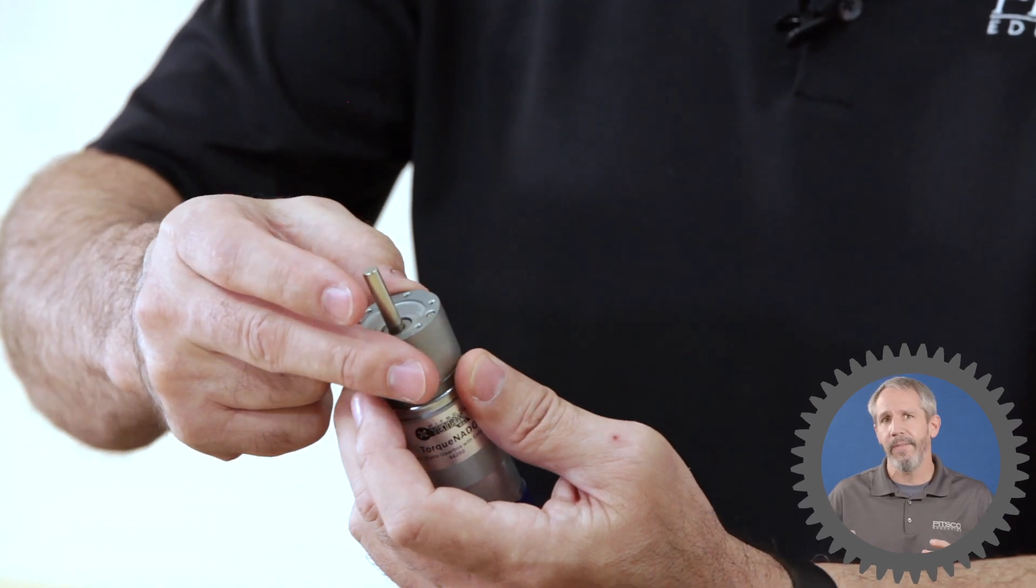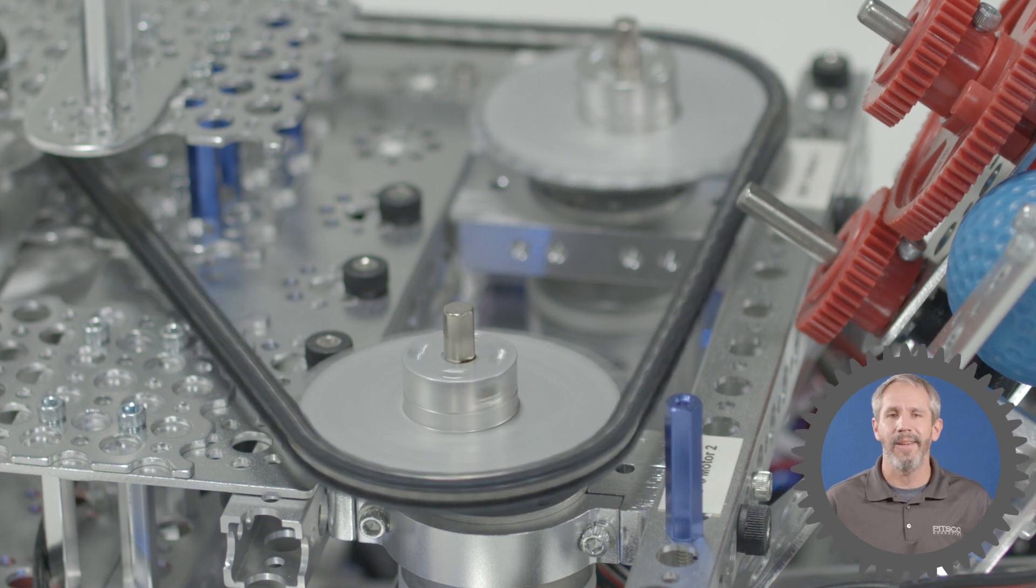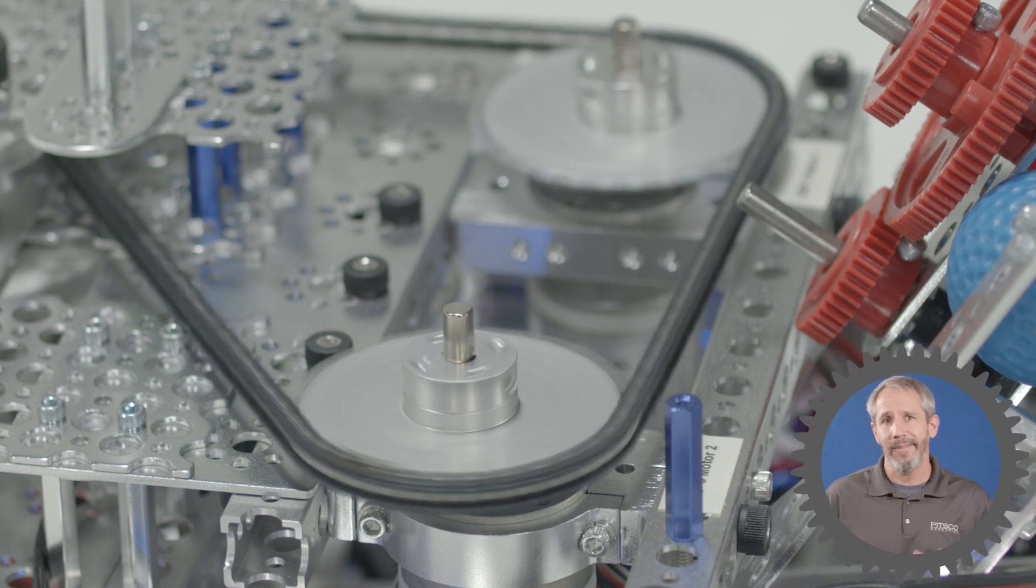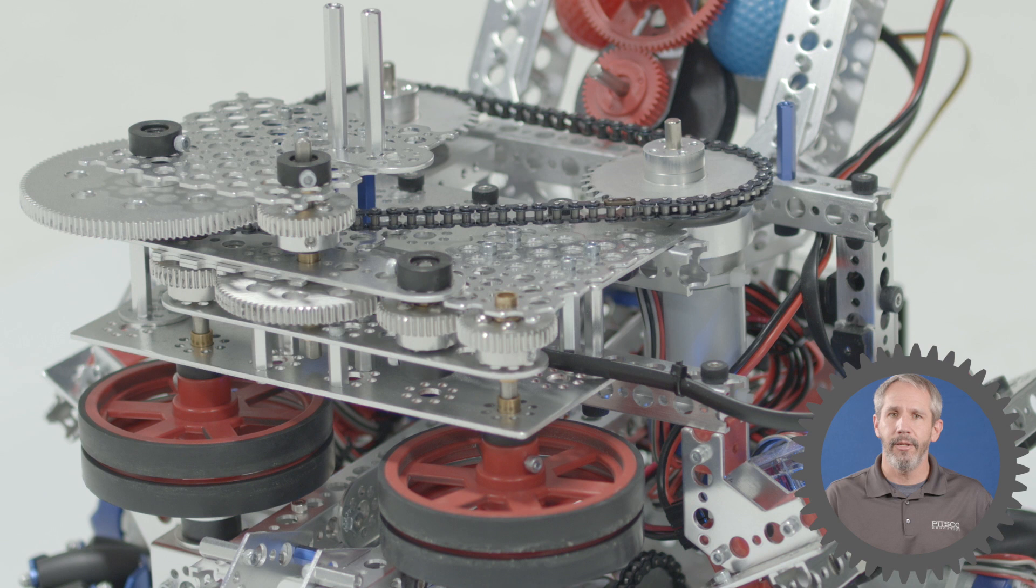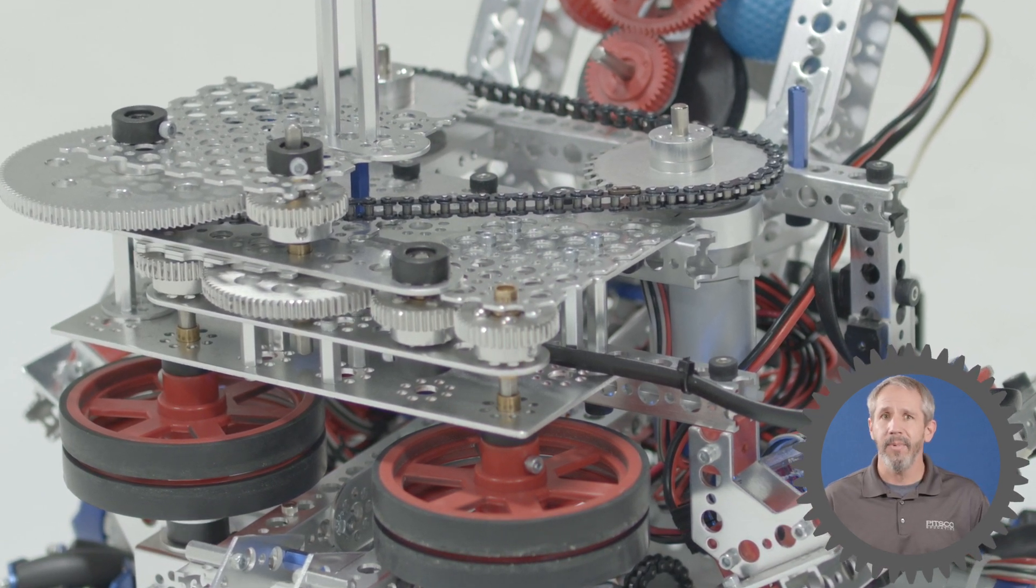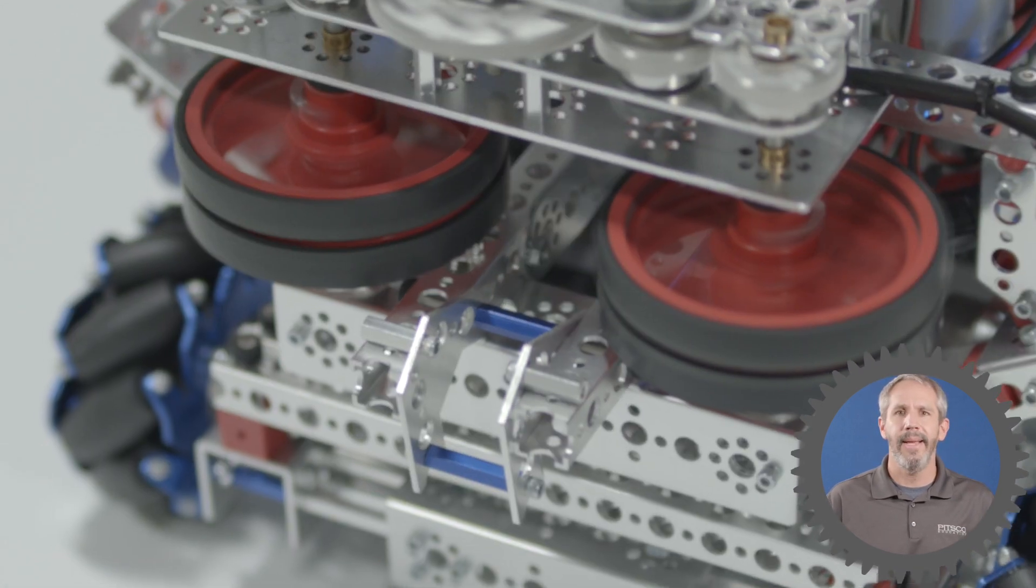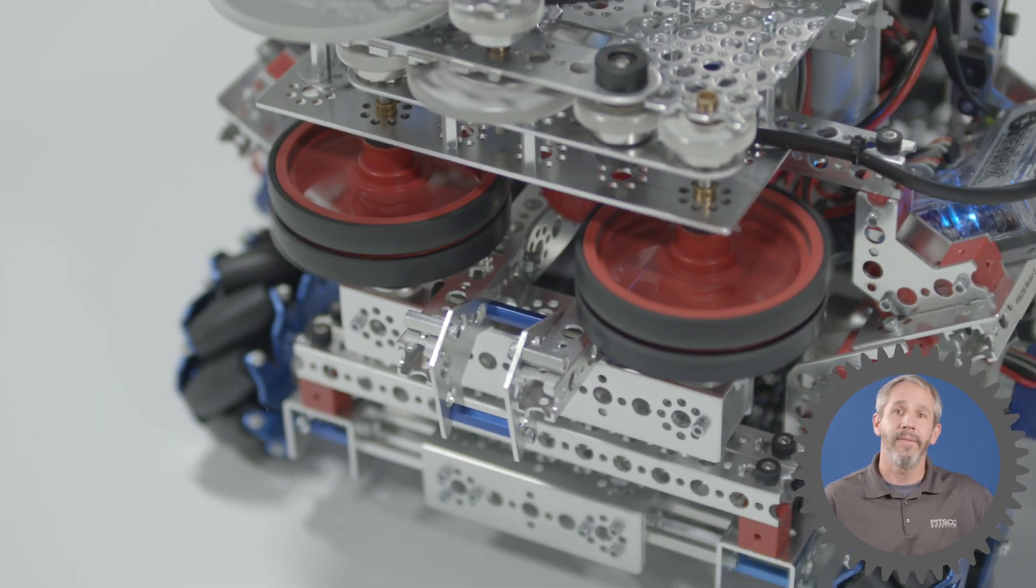Because we're sacrificing torque, then we've got two of those Torquenados that are synced together through a chain drive system. That chain drive system then drives this gear train down below, and that gear train is geared up to give our flywheels even more rotational velocity and that spits our golf balls out even further.